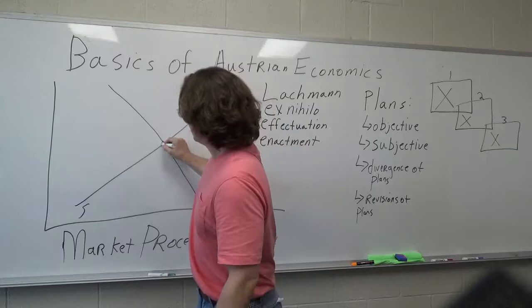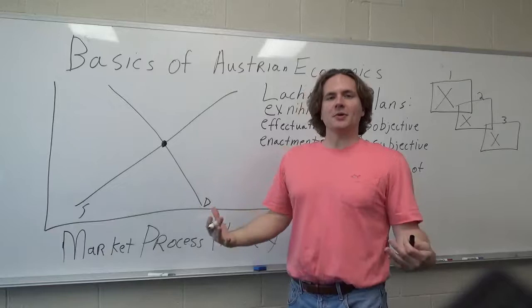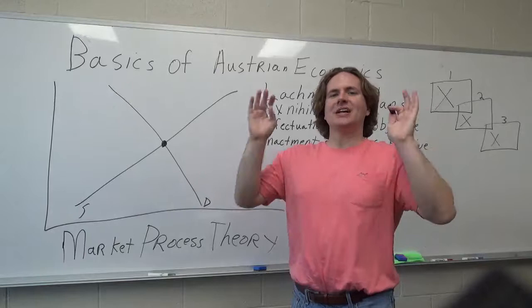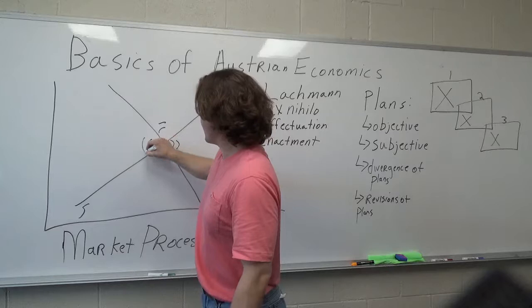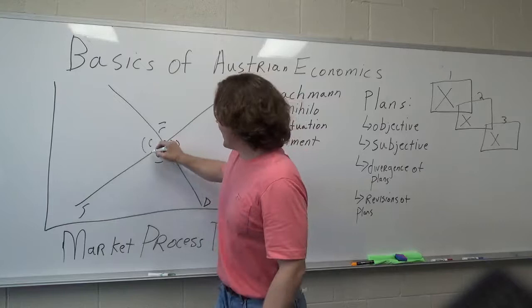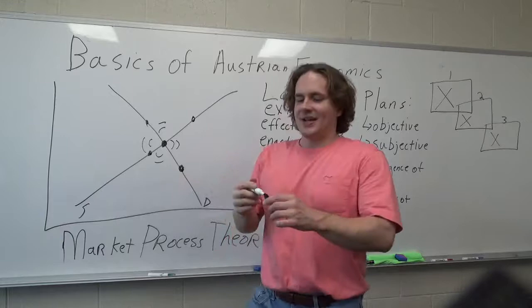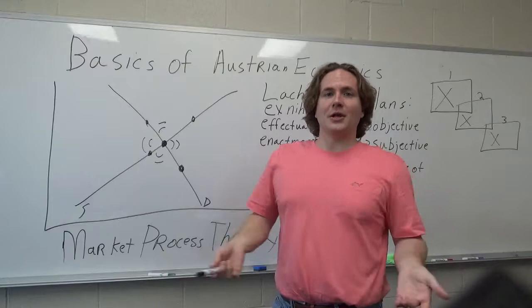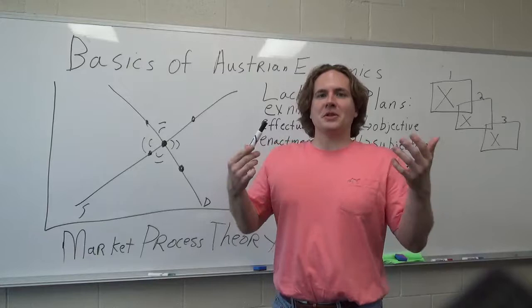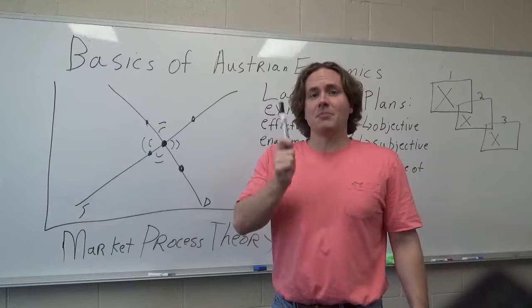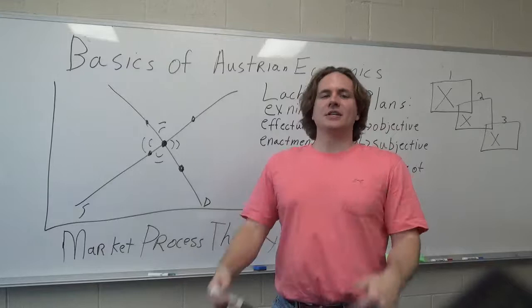Lachmann is quite different from both Kirchner and Schumpeter. The main difference is this supply and demand curve. Whereas Schumpeter and Kirchner always assume that the market converges towards equilibrium, Lachmann says no, markets are in a continual state of disequilibrium. This equilibrium state never really happens, in fact it's probably just bouncing all around.